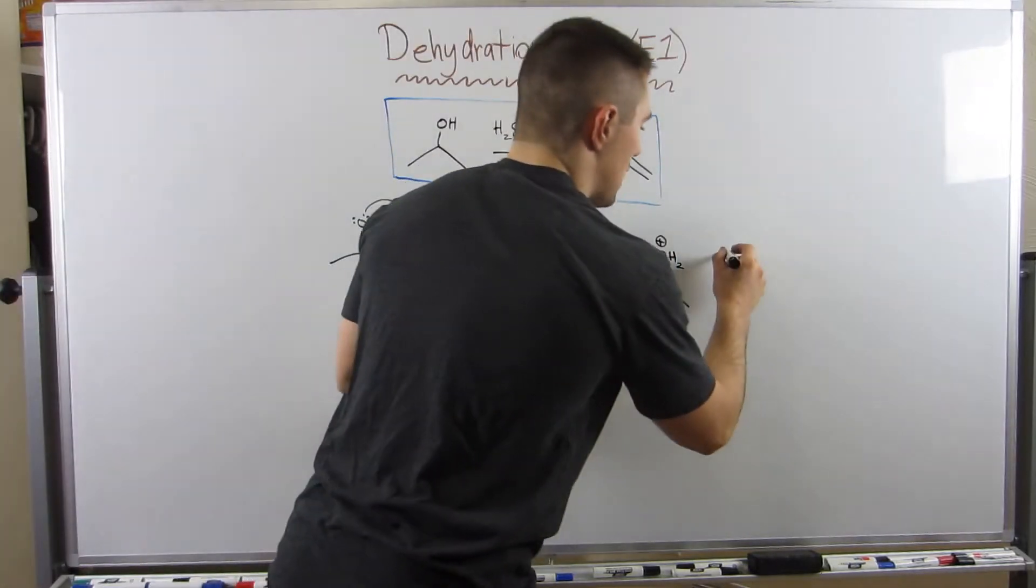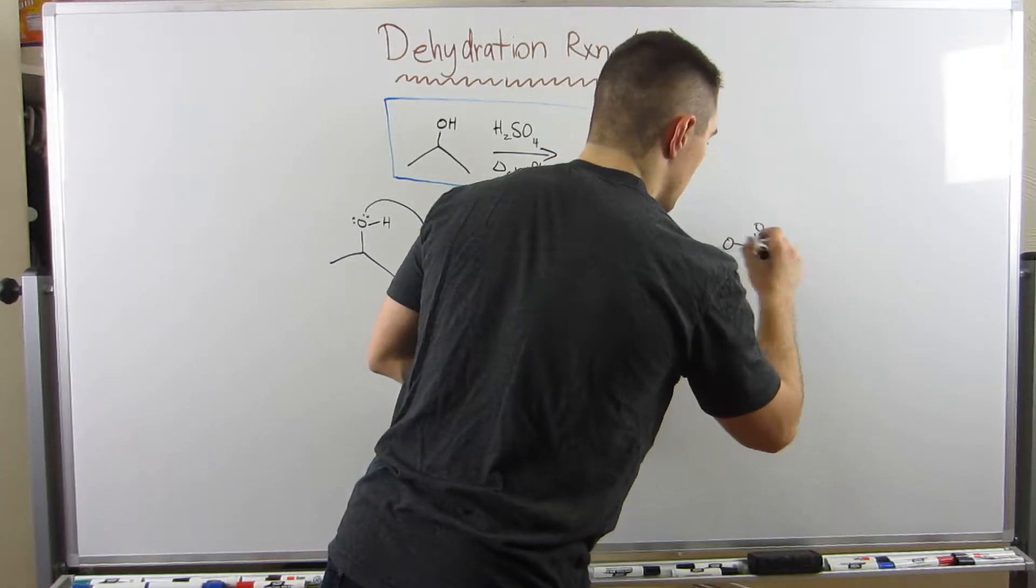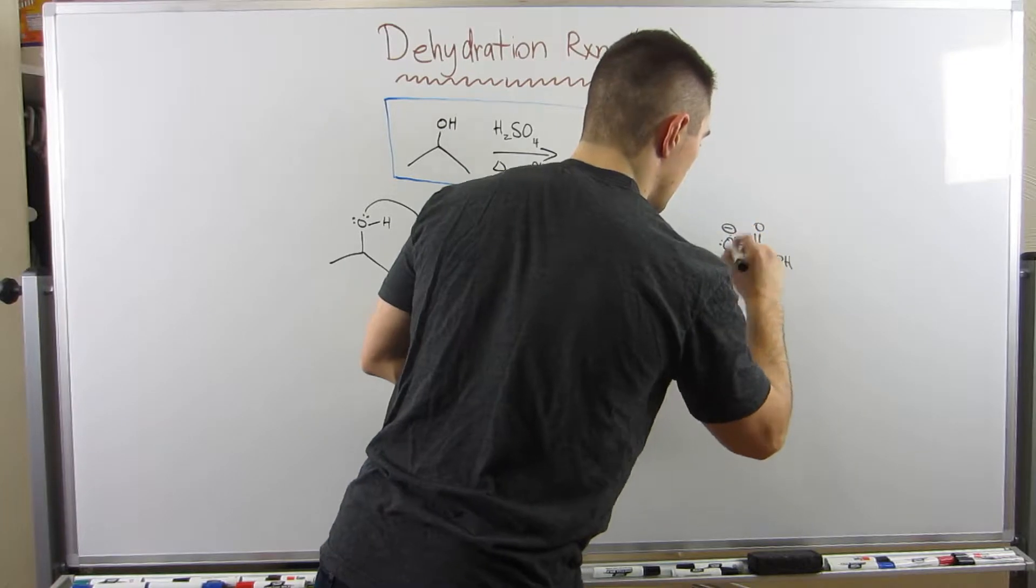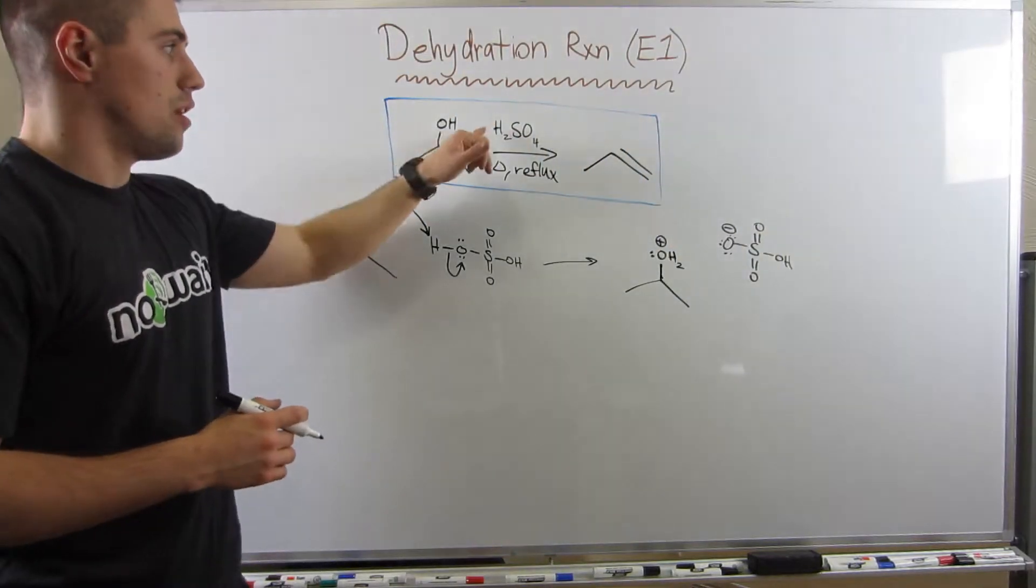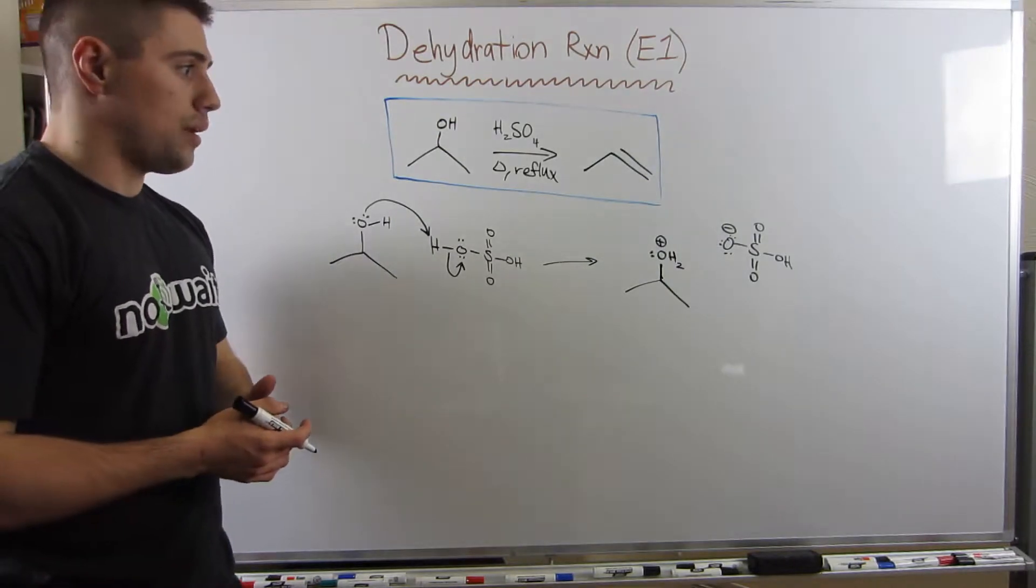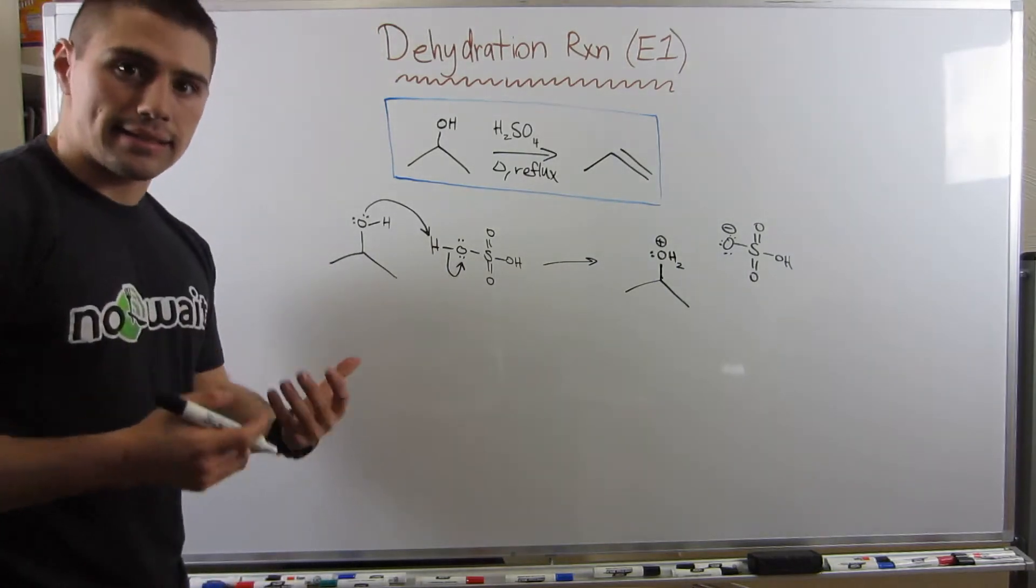So if I'm going to draw the result of that electron flow, now I have this oxygen right here. I'm going to write him like this. I know I did this in the last video, OH2, and this oxygen has a positive charge because he took his bond, he took a lone pair and made a bond. His formal charge now is one less than it was before, so he's a positive one charge.